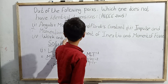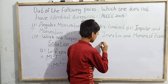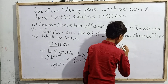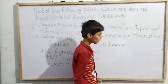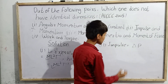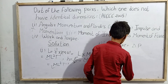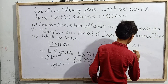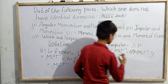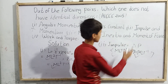For option B — impulse and momentum: impulse equals change in momentum, so it has the same dimensions as momentum, which is MLT⁻¹. Momentum is also MLT⁻¹. Since both match, option B is also wrong.